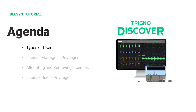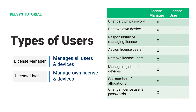This section will cover the different types of license users within LicenseSpring. There are two types of users that can access LicenseSpring: license managers and license users. We will start off by discussing license managers, and later we shall discuss license users.